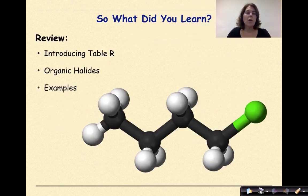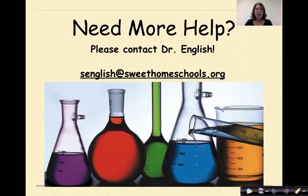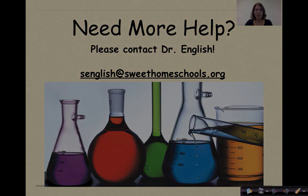So what did you learn? We introduced table R, which we're going to use a lot over the next couple of videos. We talked about organic halides, specifically fluorine, chlorine, bromine, and iodine. And then we did a bunch of examples. Need more help? Feel free to contact me. Have a great day.